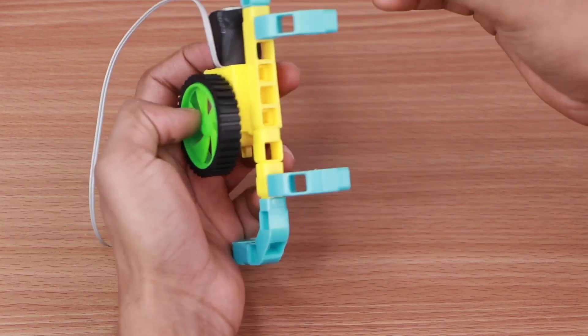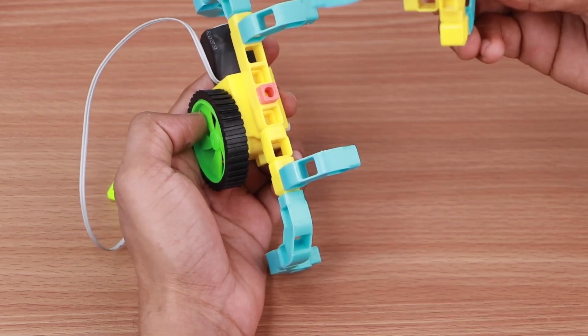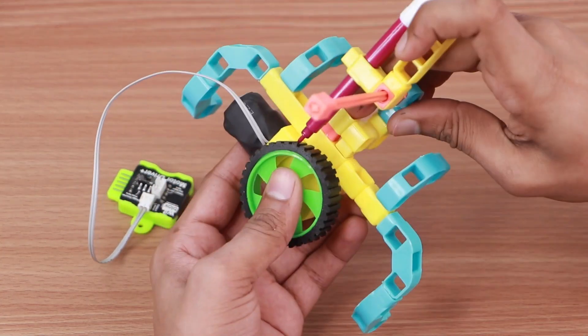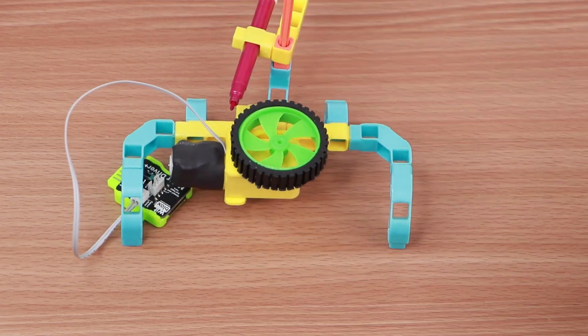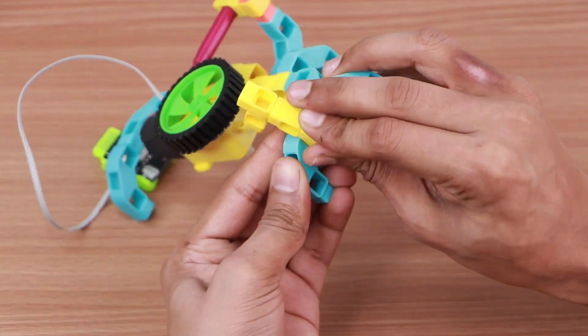Add one mm coupler to the mechanism's base. Attach the pen assembly to the base part. Attach the previous structure to the base.